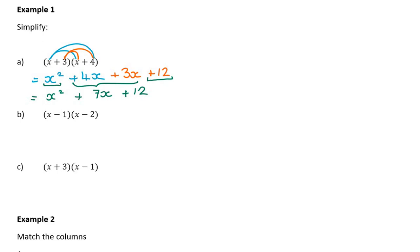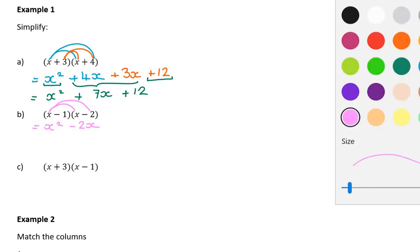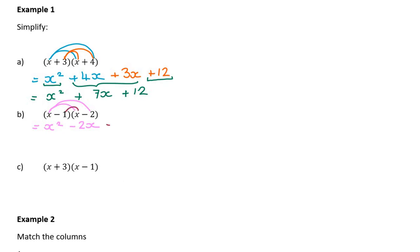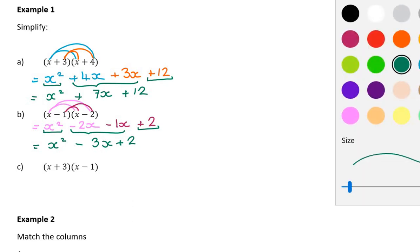Let's try the next one. Again x times x gives x squared. Then I distribute my x and get minus 2x. Now I distribute in my minus 1, so I get minus 1x, and then minus 1 times minus 2 gives me plus 2. Notice x squared is a product of x and x, and positive 2 is a product of negative 1 and negative 2. My middle terms are like terms, so I land up with x squared minus 3x plus 2. The middle term is a result of adding two like terms that were themselves products.